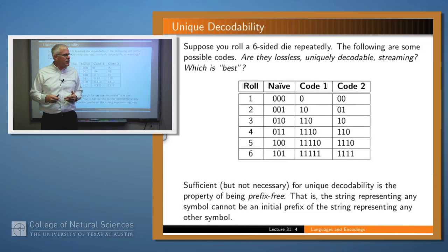So let's see what this might look like. Suppose we have our six-sided die and we roll it repeatedly. We might use any of the following codes on this table, right? So we have the naive encoding and that just uses three bits. Three bits is enough for six possibilities. Or we might use either code one or code two.